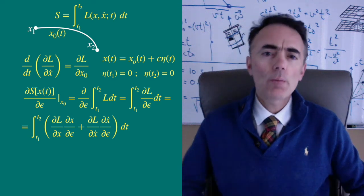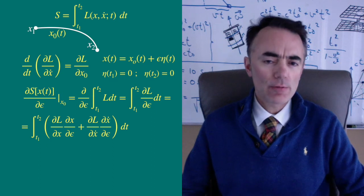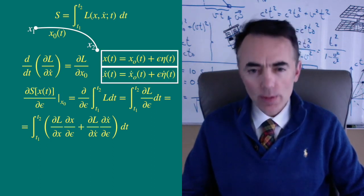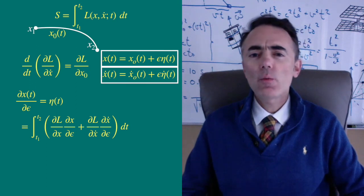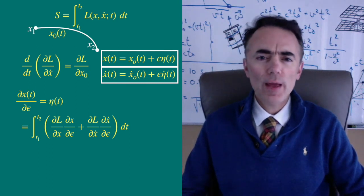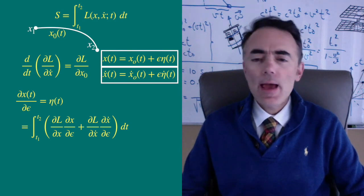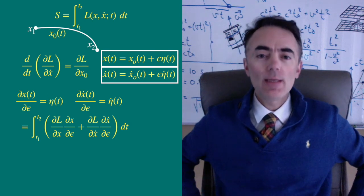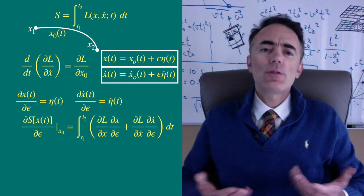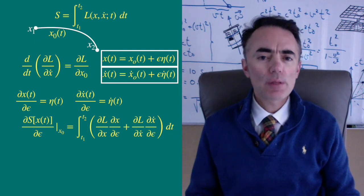Let's look back at the linearization of x of t and the corresponding x dot of t. From there we see that the partial of x with respect to epsilon is eta of t and the partial of x dot of t with respect to epsilon is eta dot. We can use these to rewrite the partial of S with respect to epsilon.